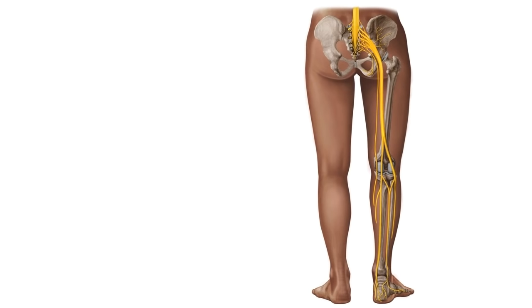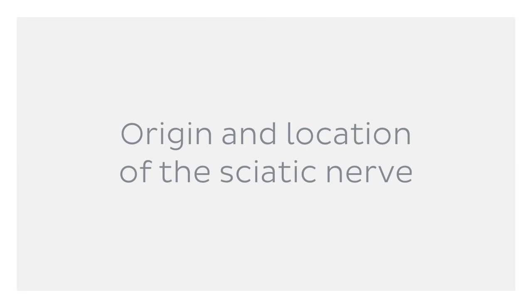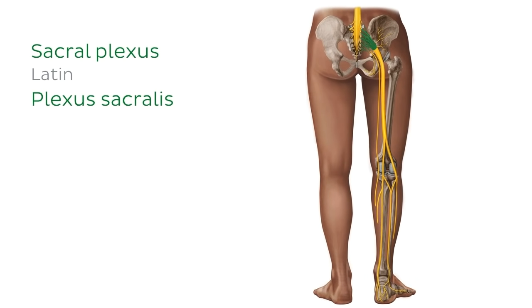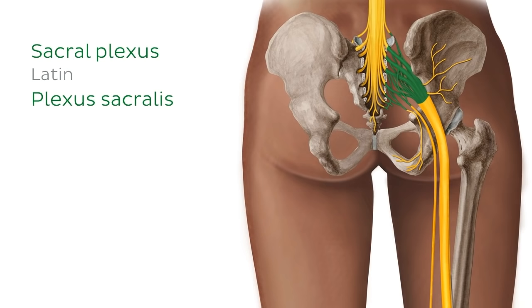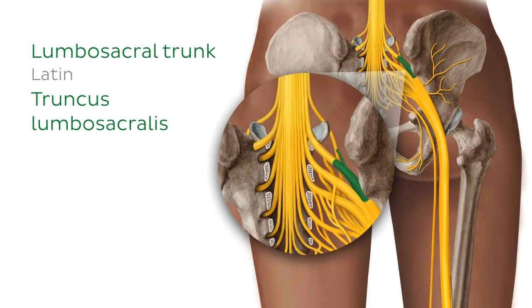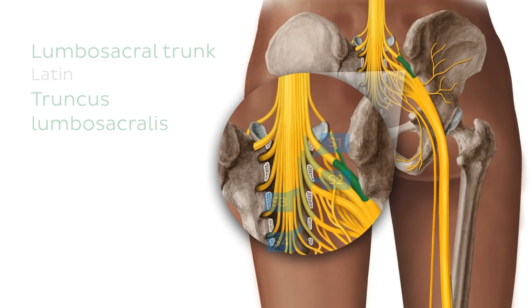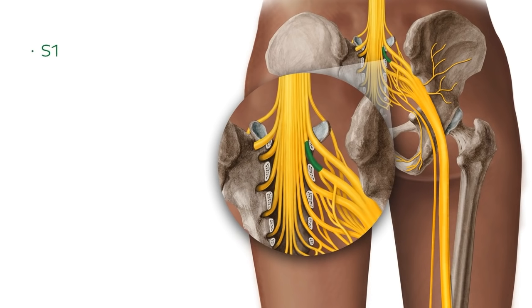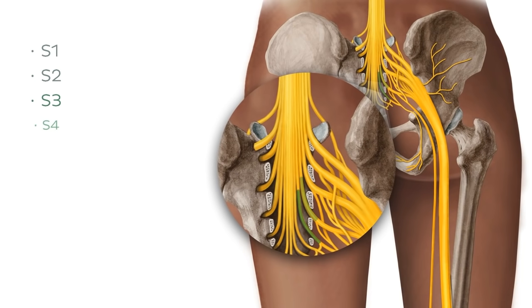Let's get started with the origin and location of the sciatic nerve. The sciatic nerve originates from the sacral plexus, which we can see here highlighted in green. The sacral plexus is formed by the lumbosacral trunk, which consists of contributions from spinal nerves L4 and L5, as well as the spinal nerves S1, S2, S3, and S4.